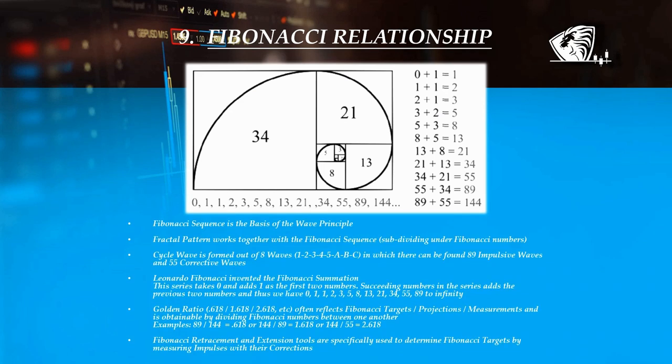The Fibonacci sequence is the basis of the wave principle. Fractal pattern works hand in hand with the Fibonacci sequence, and in a full cycle of eight waves — one, two, three, four, five, A, B, C — we can find 89 waves in the impulsive patterns and 55 waves in the corrective patterns.